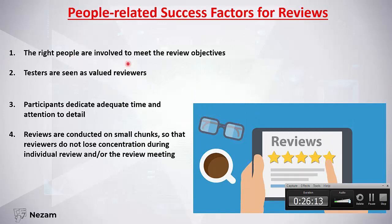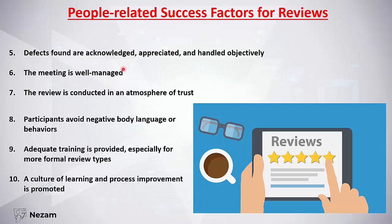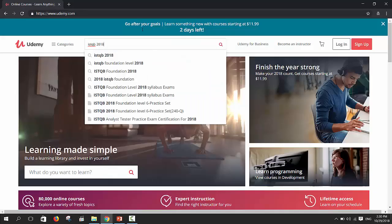People-related success factors include: choosing the right persons for the review; testers should be seen as valued reviewers; participants should give adequate time to the review; reviews should be conducted on small chunks so concentration is maintained — large documents should be split across multiple review meetings; defects found should be acknowledged, appreciated, and handled objectively; meetings should be well managed in an atmosphere of trust; participants should avoid negative body language or behaviors; training should be provided, especially for formal reviews; and a culture of learning and process improvement should be maintained.